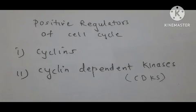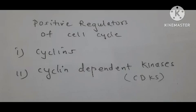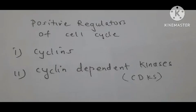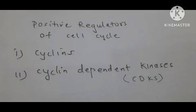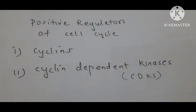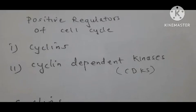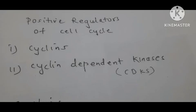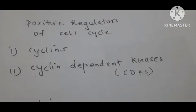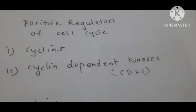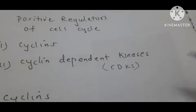There are various kinds of cyclins which participate in the cell cycle at various phases. The level of cyclins fluctuates during the cell cycle as per their need. The second component which acts as a positive regulator and works in coordination with cyclins are cyclin-dependent kinases, also known as CDKs.